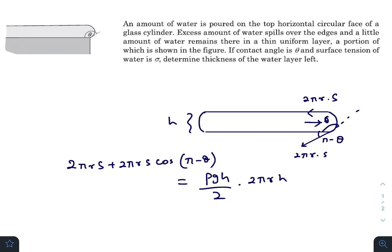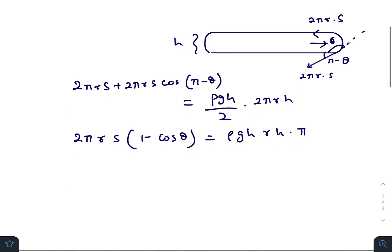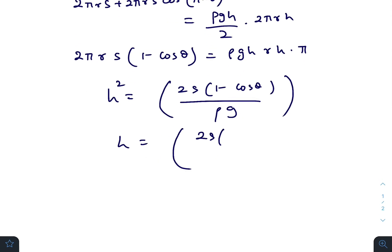Okay, so if we write this: 2πrs(1 minus cos theta) equals ρgh²π. So equating it properly we get h² equals 2s(1 minus cos theta) divided by ρg. So h will be the square root of 2s times (1 minus cos theta) divided by ρg.